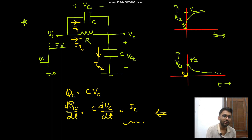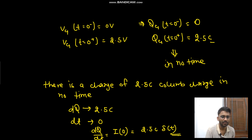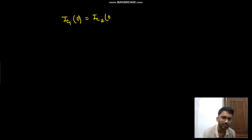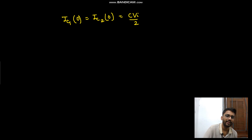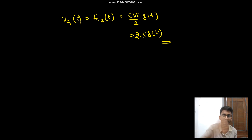Similarly for VC2, the current at t equals zero is also an impulse. So IC1 at t equals zero equals IC2 at t equals zero, which equals (C·Vin/2)·δ(t), or equivalently 2.5·δ(t).